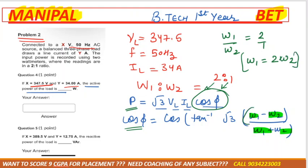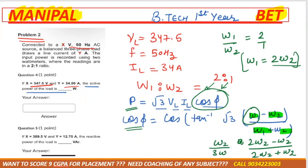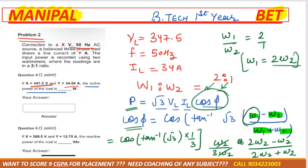Substituting the ratio W1 = 2W2: (2W2 - W2) / (2W2 + W2) = W2 / 3W2. The W2 cancels, giving cos(tan⁻¹(root 3 × 1/3)). Solve this using a calculator to get cos φ, then substitute to get the active power.